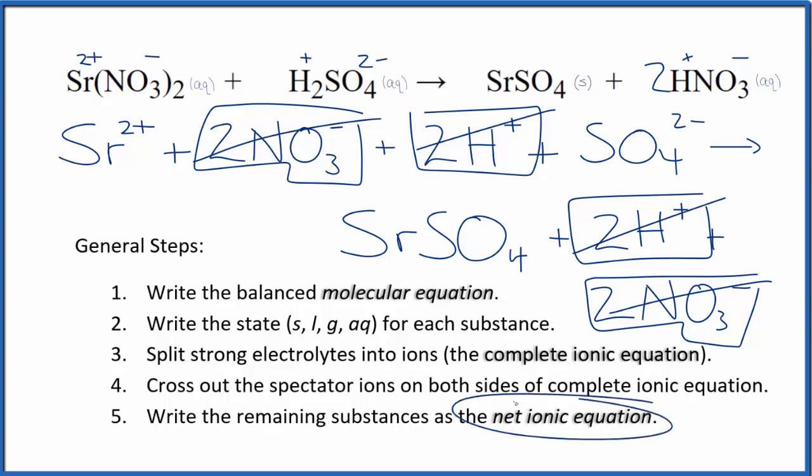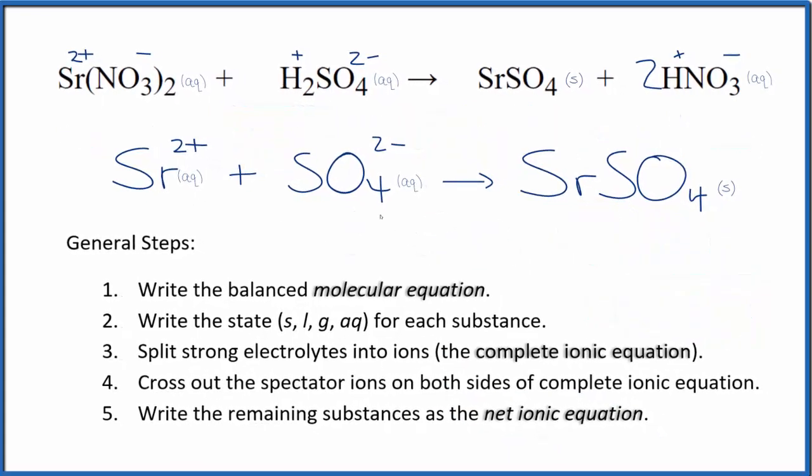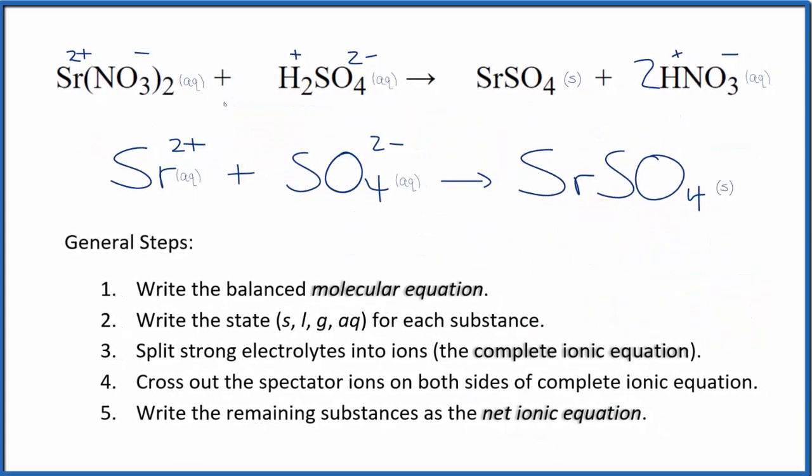That gives us the net ionic equation for Sr(NO3)2 plus H2SO4. I'll clean this up and write the states. This is the balanced net ionic equation for strontium nitrate plus sulfuric acid. You'll note the atoms are balanced and the charge is balanced as well. 2+ and 2- gives us a net charge of 0. In the products, this is neutral, net charge of 0.